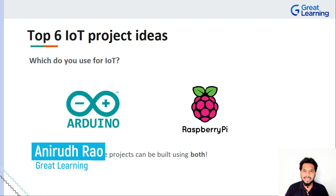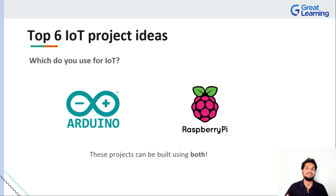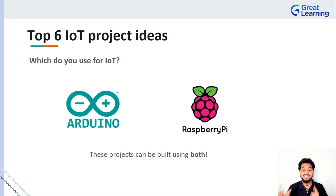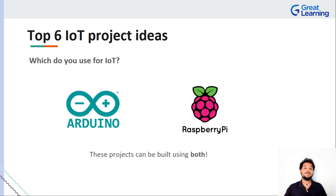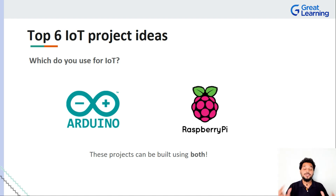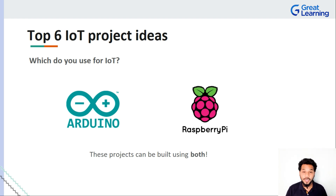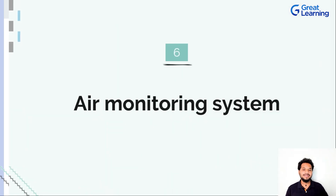The first question one must ask when discussing IoT project ideas is compatibility. Whether you are an IoT developer based on Arduino or you work completely on Raspberry Pi, all six ideas we are about to discuss can be built using either of these platforms. It will work whether you're just getting started with Arduino or you're a full-blown professional working with Raspberry Pi.